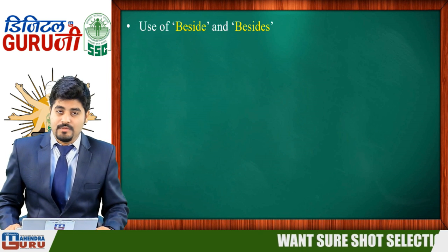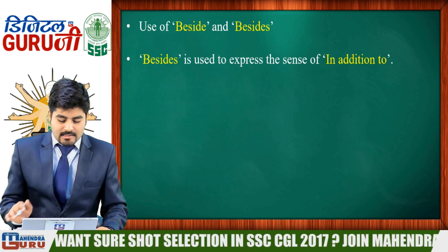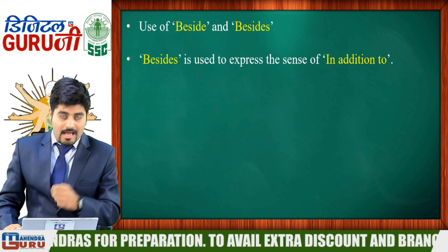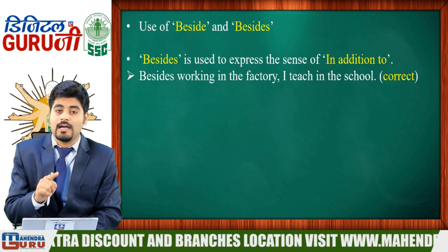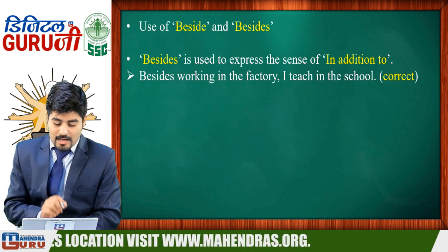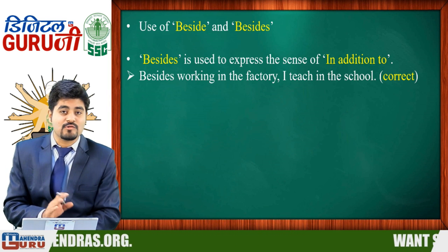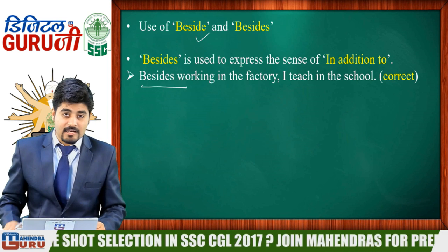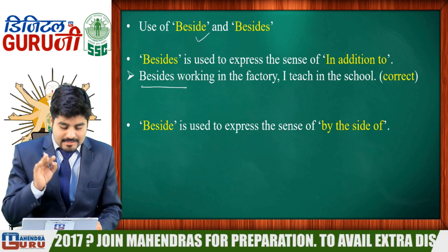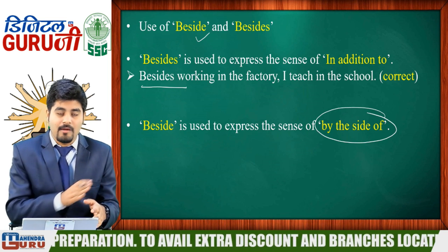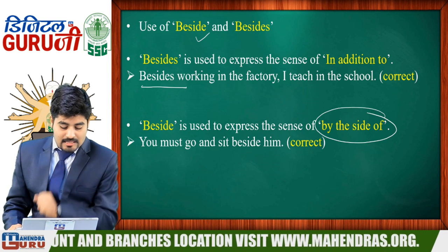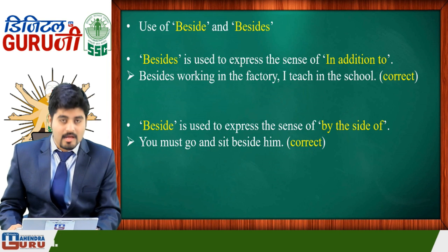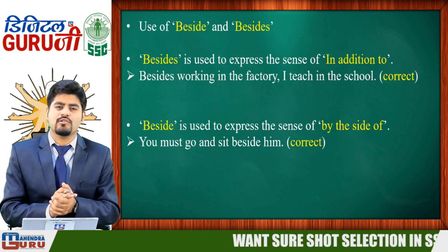Now let's look at 'beside' and 'besides.' 'Besides' is used to express the sense of 'in addition.' For example: 'Besides working in the factory, I teach in this school' — meaning I do two things: work in a factory and also teach in school. 'Beside' is used to express 'by the side of.' For example: 'You must go and sit beside him' — meaning sit next to him, by his side.